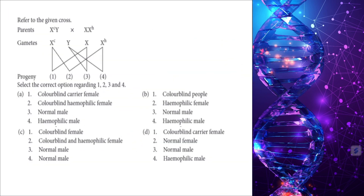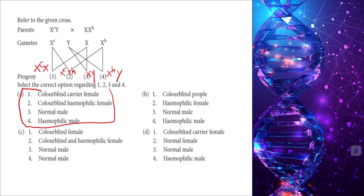Referring to the cross: crossing X^c and X gives a color-blind carrier female. X^c and X^h gives a color-blind hemophilic female. X and Y gives a normal male. Option A is the correct answer for identifying positions 1, 2, 3, and 4 in the cross.